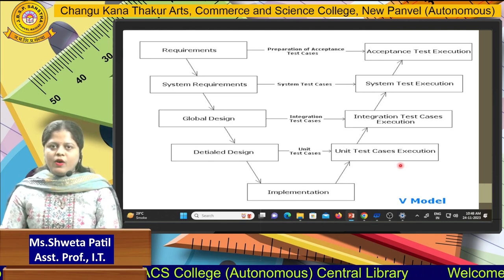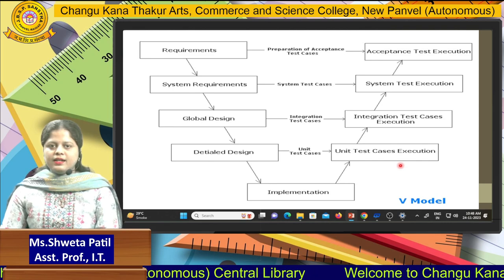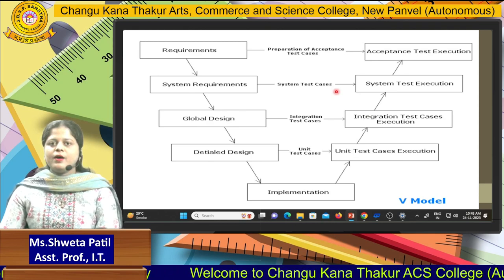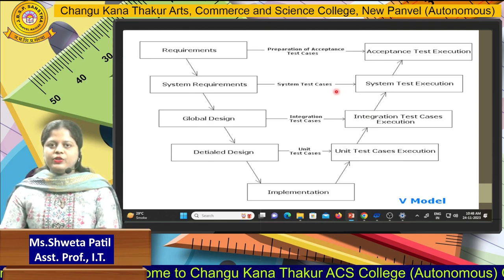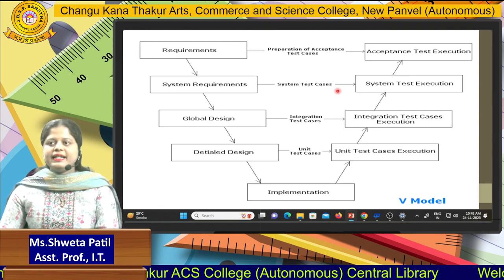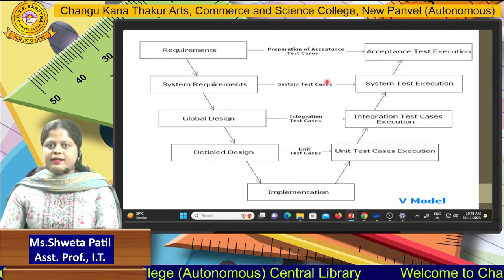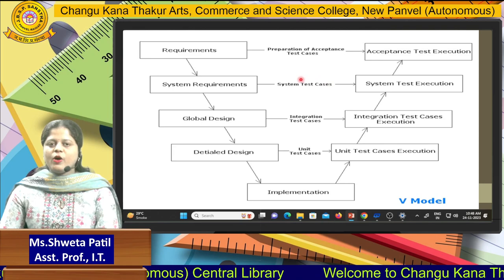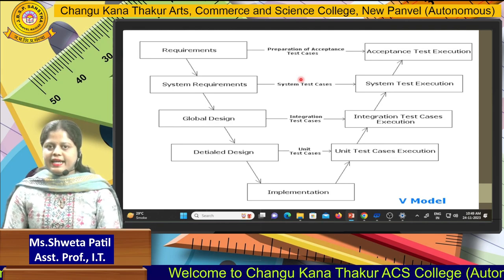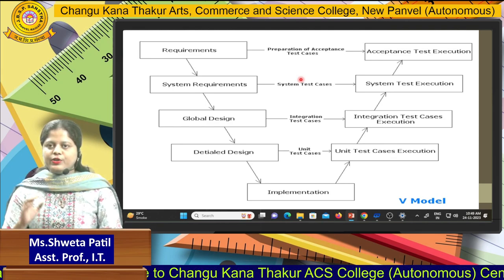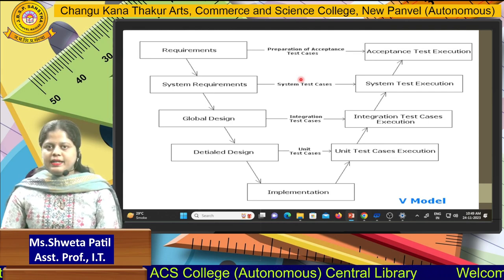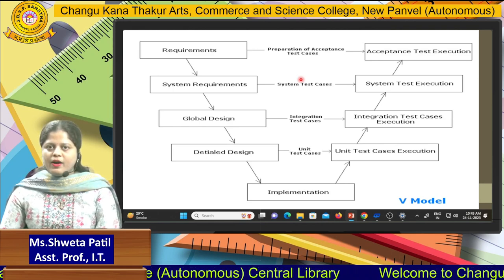The V-V Model is basically used after the waterfall model — it is an extension of the waterfall model. In the waterfall model, we see all the phases one by one and testing is done at the end of the cycle. But in the V-V Model, testing can be done parallelly. This is the main advantage: simultaneously, for every phase, we are going to perform testing. So parallel testing can be done in the V-V Model, making it one of the best models in the life cycle.